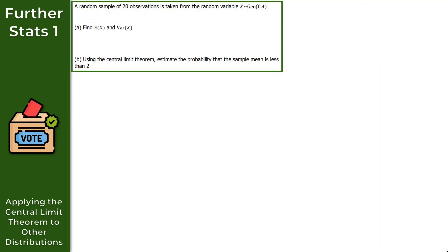Let's start off with question one. We have a random sample of 20 observations taken from the random variable X, which follows a geometric distribution with a parameter of 0.4. For part A, we want to find the expectation of X — that's E(X) — and also the variance of X, Var(X).